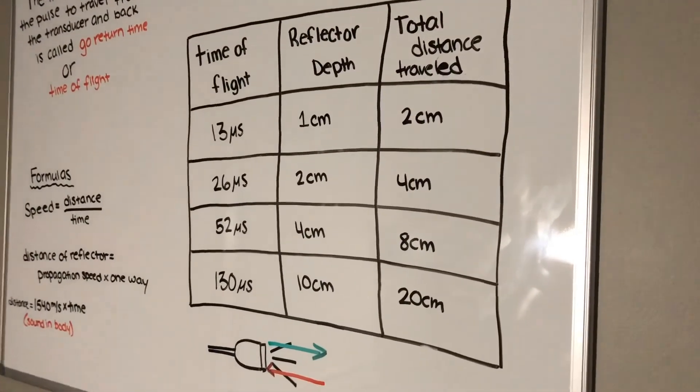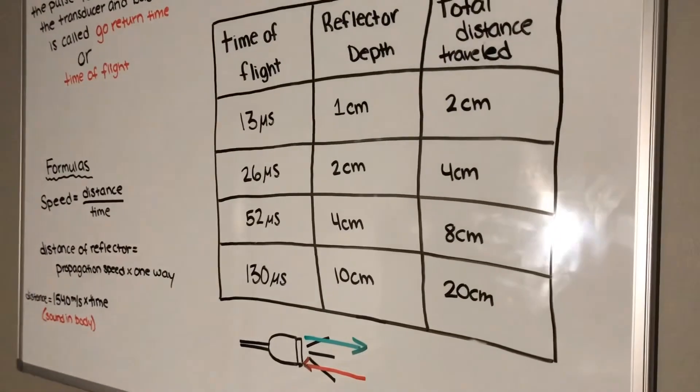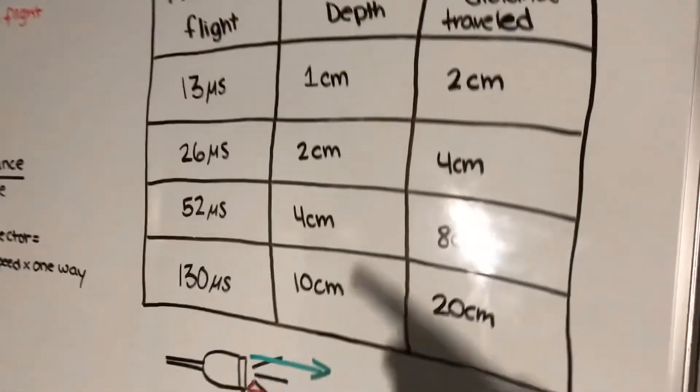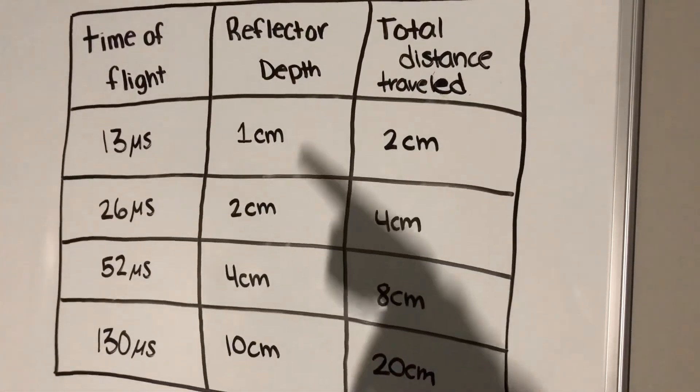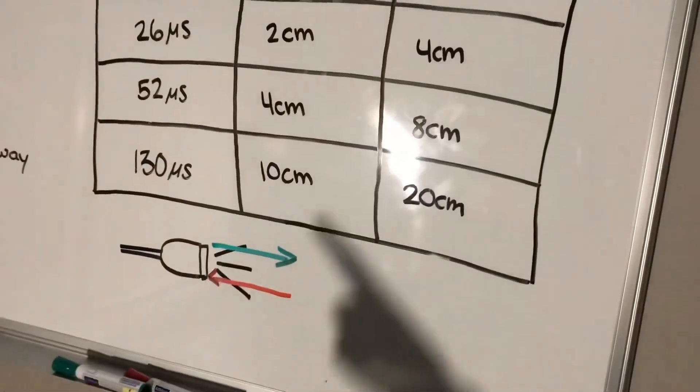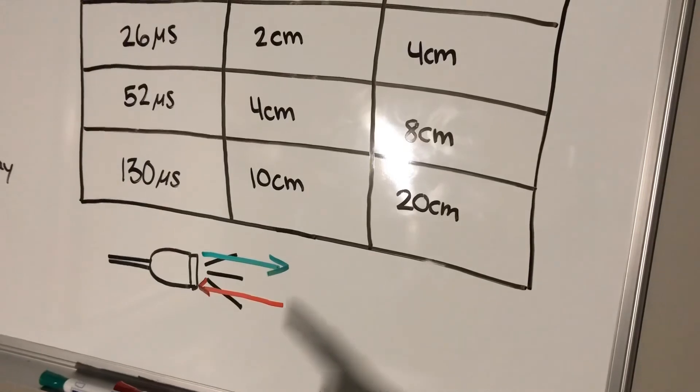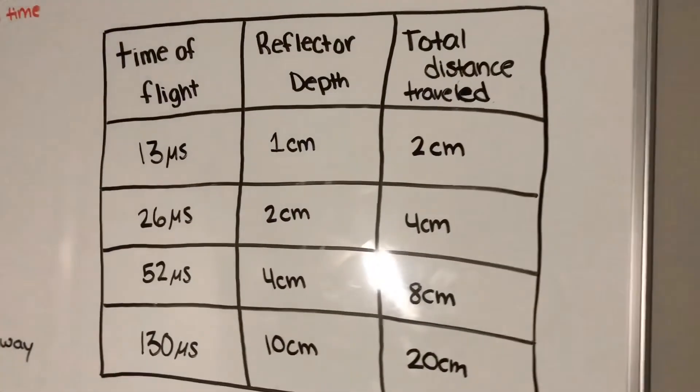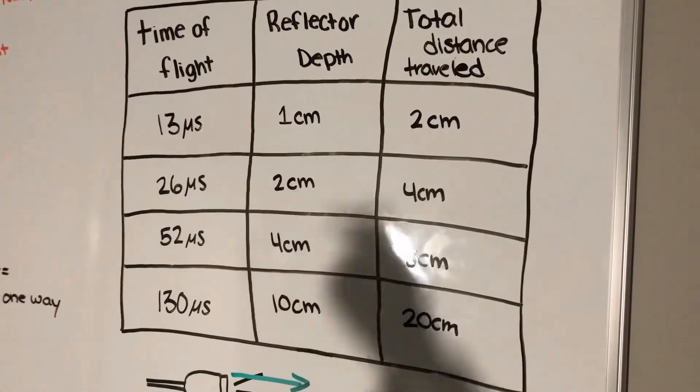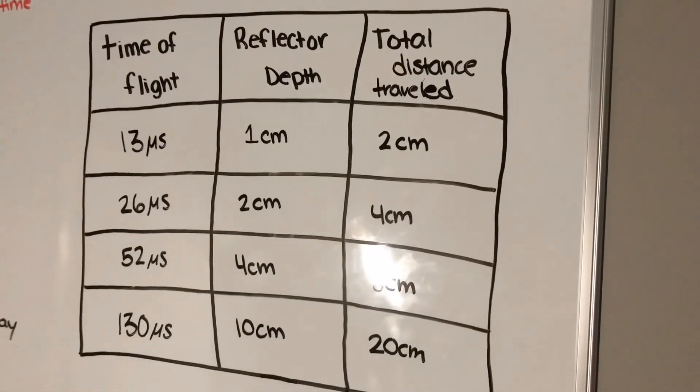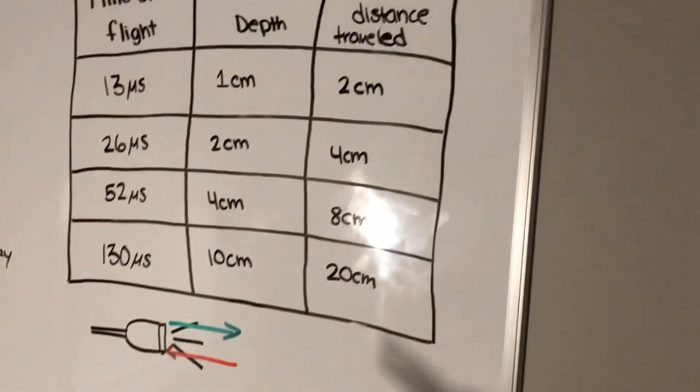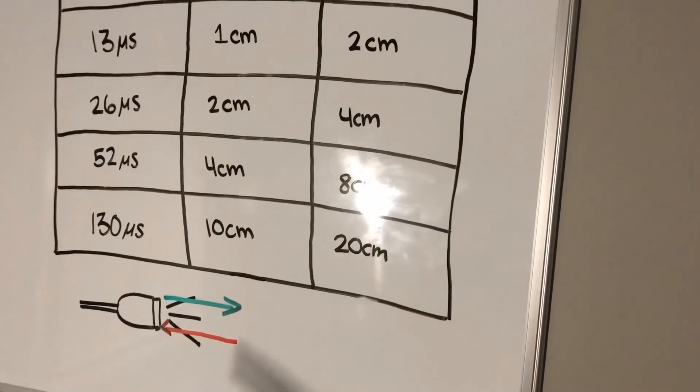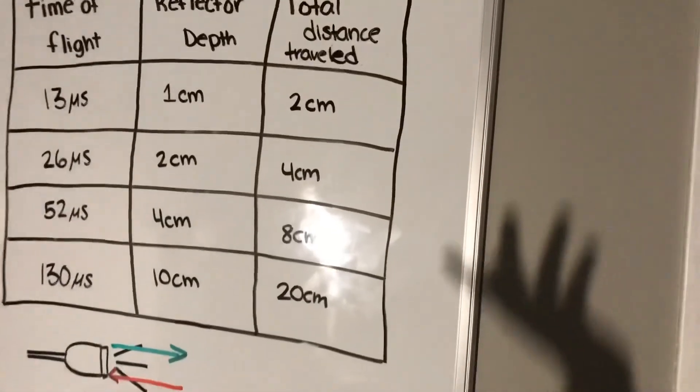Here we have the 13 microsecond rule, which is the time of flight. So when the reflector is going towards the body, it's one centimeter, and the total distance would be two because it's coming out one, going in one. Then if the time of flight is 26 microseconds, then the reflector depth would be two centimeters, which means the total distance traveled, if it's two centimeters out, two centimeters back, it would be four centimeters.